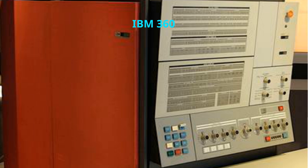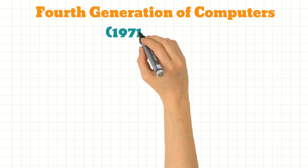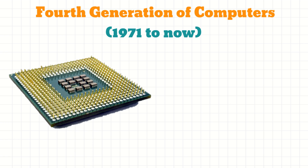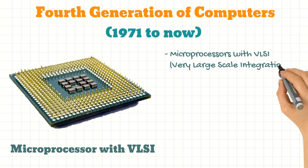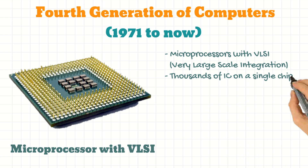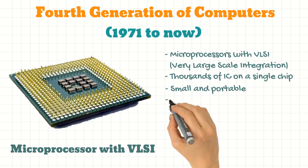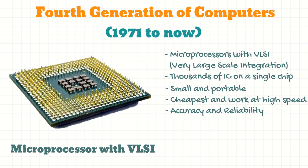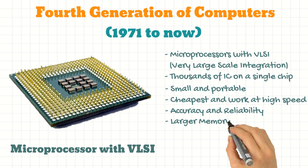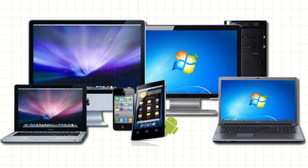Examples include IBM 360 and PDP-11. The fourth generation of computers started from year 1971 with the advent of microprocessors which used VLSI, or very large scale integration technology, to have thousands of ICs on a single silicon chip. This made the computers small and portable. They were cheap and could work at high speed with a lot more accuracy and reliability. They had larger memory, which led to an explosion in the development of GUI software, application softwares and handheld devices. Examples include all the computers you see around you today.